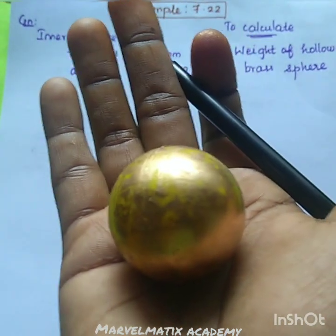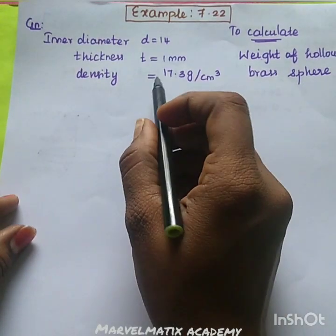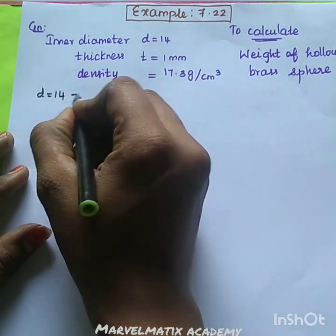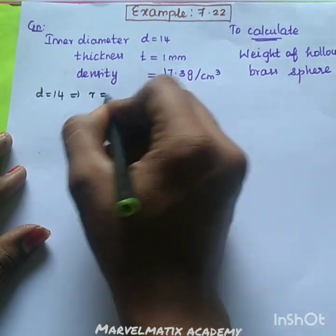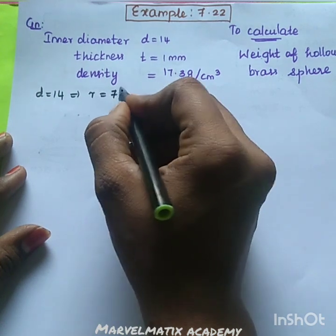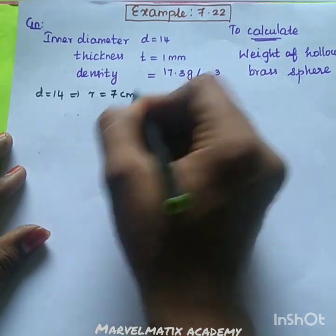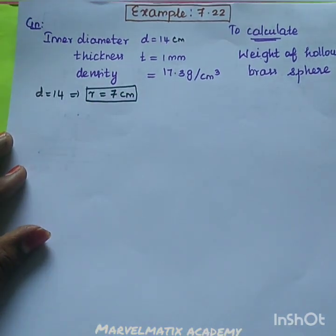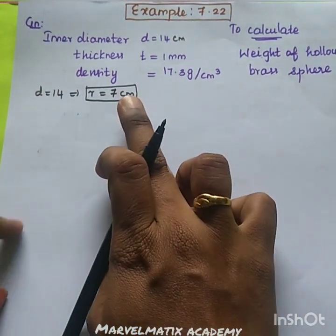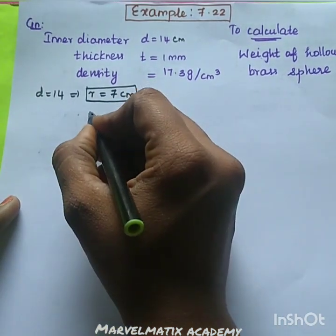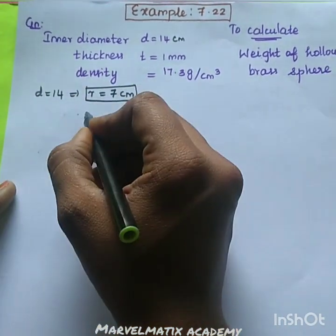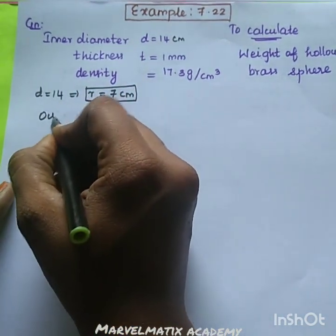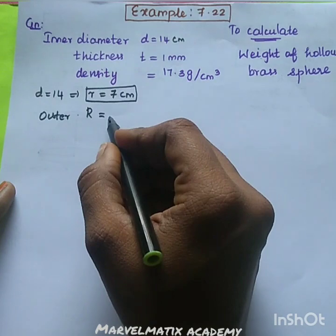So here we have questions. This is the inner diameter; we make the inner radius. So this is four, then it is six r. So we have seven centimeters and five centimeters. Now we're going to make the inner diameter using the two dimensions. So this is the outer radius — what is the outer radius?